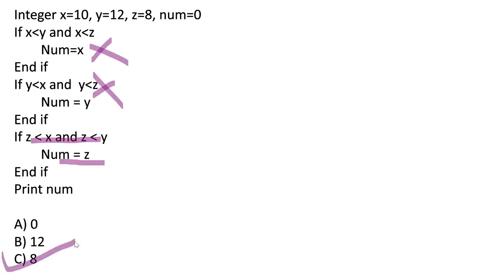The optimal approach for this type of question: check whether the if-statements are nested-if (not if-else). If they are all plain if-statements, use a bottom-up approach — check the last if first. If the last condition is true, that final value assigned to num will be printed. If false, go upward to the previous if. This saves time because only the last true assignment matters.